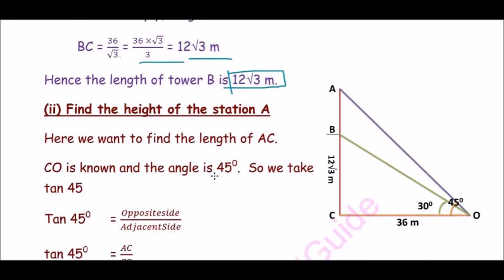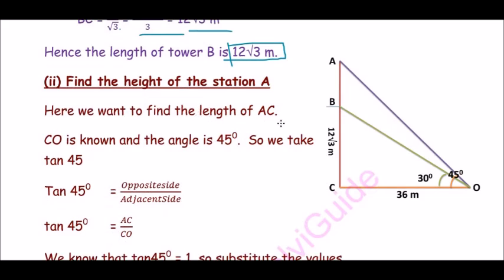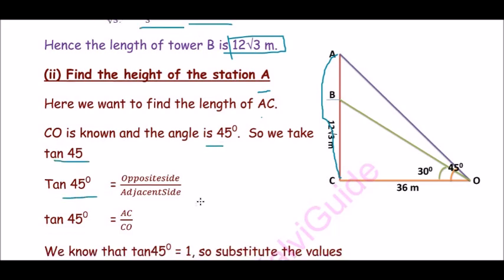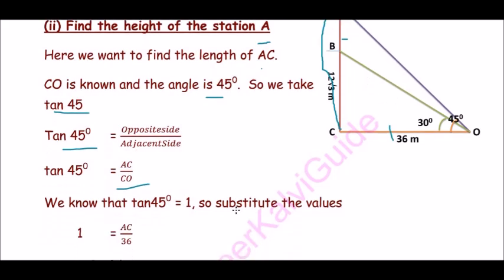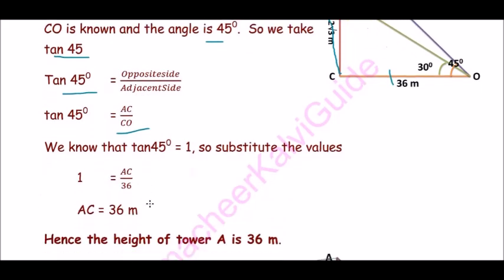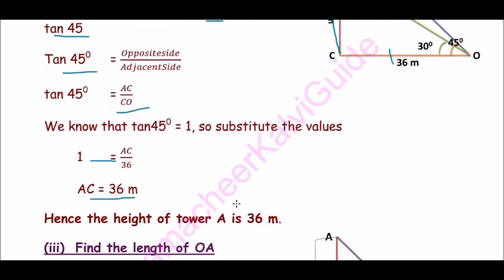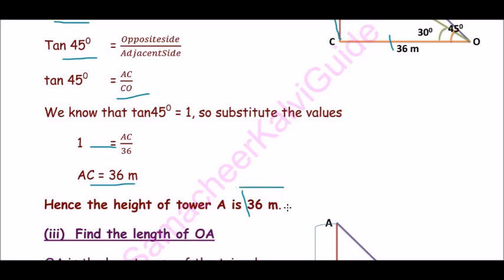The next question is: find the height of station A. So here we want to find the length of AC. CO is known and the angle is 45 degrees, so we take tan 45. Again, tan 45 degrees equals opposite side by adjacent side, that is AC by CO. We know that tan 45 degrees is 1. So substitute these values: 1 equals AC by 36. Cross multiply, we get AC equals 36 meters. Hence, the height of tower A is 36 meters.